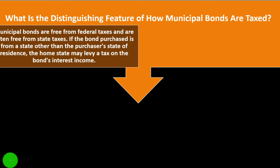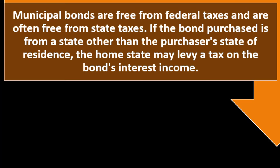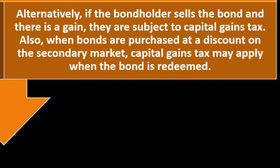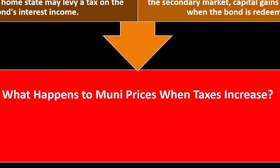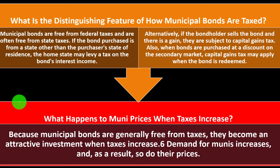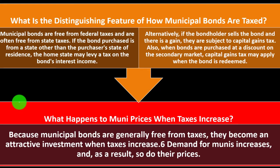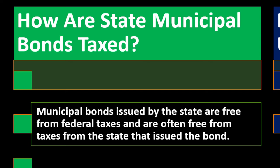What is the distinguishing feature of how municipal bonds are taxed? Municipal bonds are free from federal taxes and are often free from state taxes. If the bond purchased is from a state other than the purchaser's state of residence, the home state may levy a tax on the bond's interest income. If the bondholder sells the bond at a gain, they are subject to capital gains tax. When bonds are purchased at a discount on the secondary market, capital gains tax may apply when the bond is redeemed. What happens to muni prices when taxes increase? Because municipal bonds are generally free from taxes, they become an attractive investment when taxes increase — demand for munis increases and so do their prices.